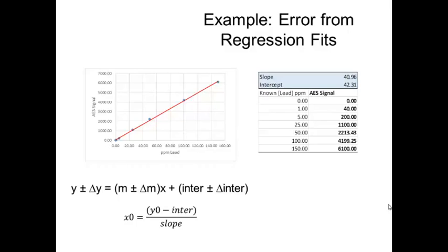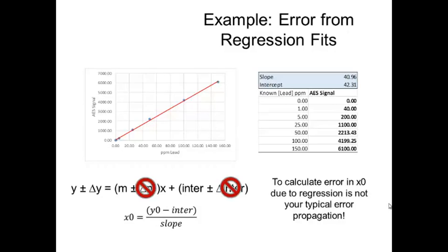But you don't propagate the error in the way I showed you the first week. That's because linear regression is a far more complicated mathematical fitting process. So we can't simply rely on the error in the slope and the intercept to give us the actual error when we use the calibration curves to calculate what's in an unknown.